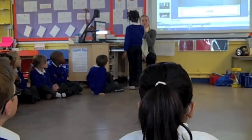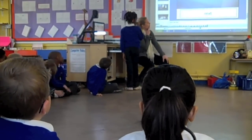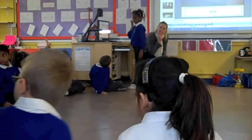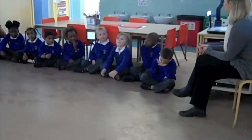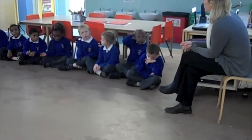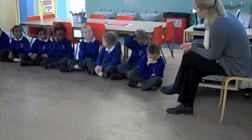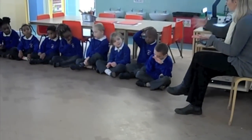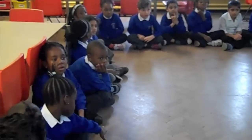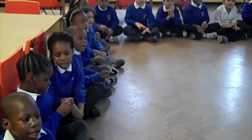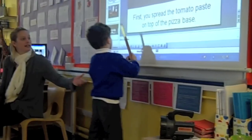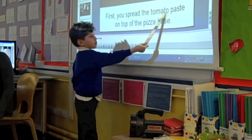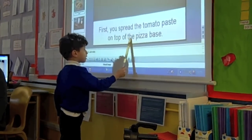Very good. What do we remember? Can we help her out here? You need a capital letter. You need a capital letter. Then what? Then you put the vegetable toppings on top. Yes. Let's all sound that out. First you spread the tomato paste on top of the pizza base.